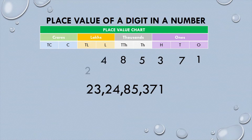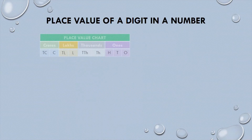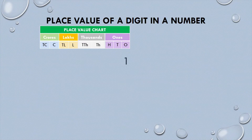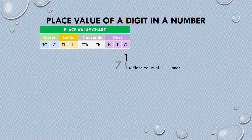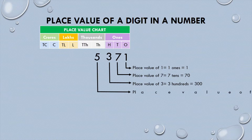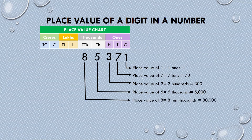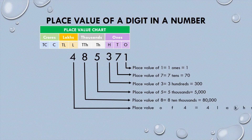While writing, we will place the number from right to left in the place value chart. The place value of 1 is one ones, which is 1. The place value of 7 is seven tens, which is 70. The place value of 3 is three hundreds, which is 300. The place value of 5 is five thousands, which is 5,000. The place value of 8 is eight ten thousands, which is 80,000.